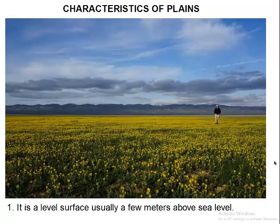Let's look at some characteristics of Plains. One: it is a level surface, usually a few meters above sea level. When you look at the picture here, you can see that this land is very level — that is what we term as a Plain. So one characteristic that can be identified with a Plain is that it has a flat or level surface.